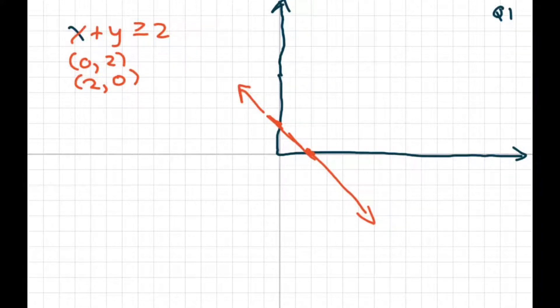Now it says that it has to be greater than, so if you plug in 0, 0 here, and you put 0 plus 0, we know that that's not greater than or equal to 2. So basically we're going to be shading in the opposite direction instead of down.